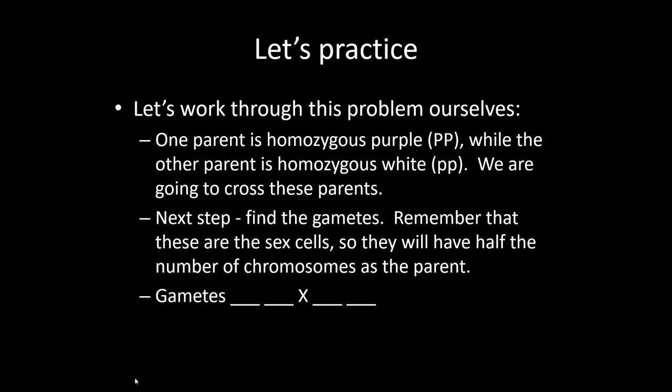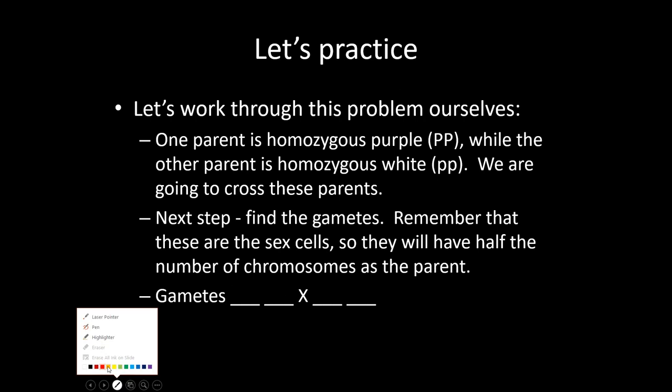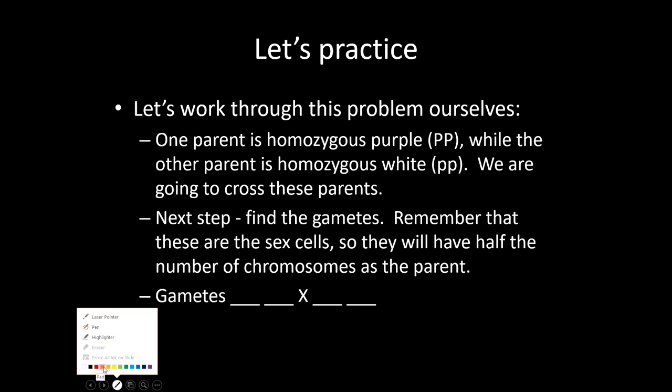We had already done this first part, but I'm going to run through it again so we're all on the same page. Once you know what your parents are, the next step is to figure out your gametes. Remember that gametes can only have half the number of letters the original parent has. If one parent was big P big P, the gametes it can produce are big P or big P. For the other parent, little P little P, the gametes are little P or little P.